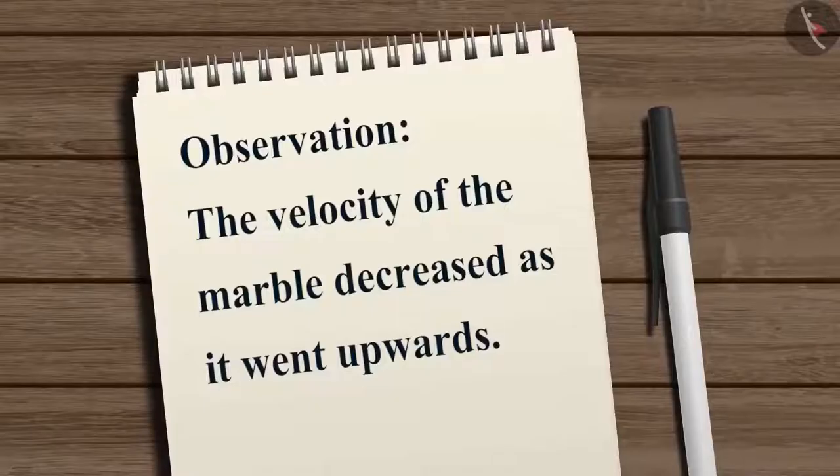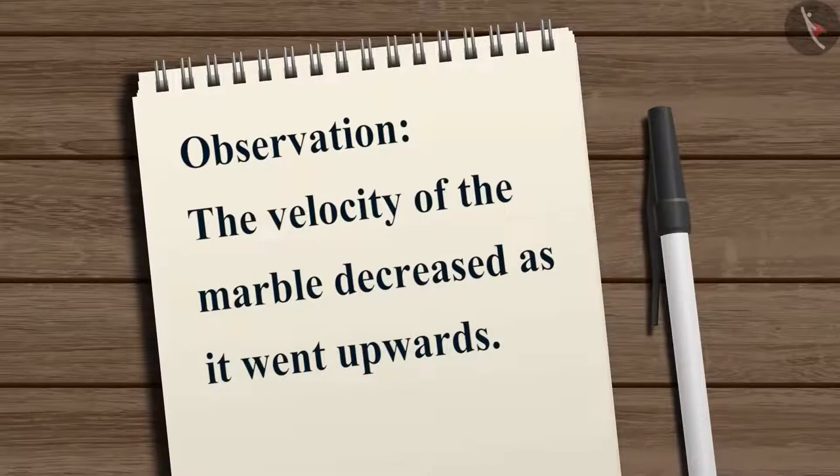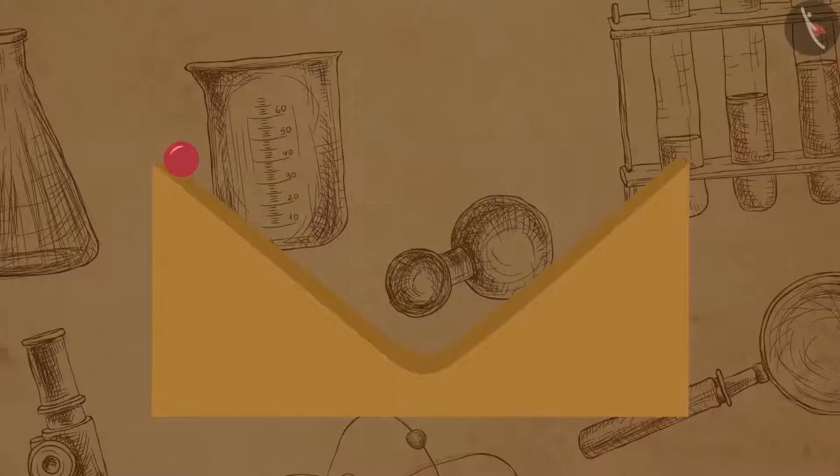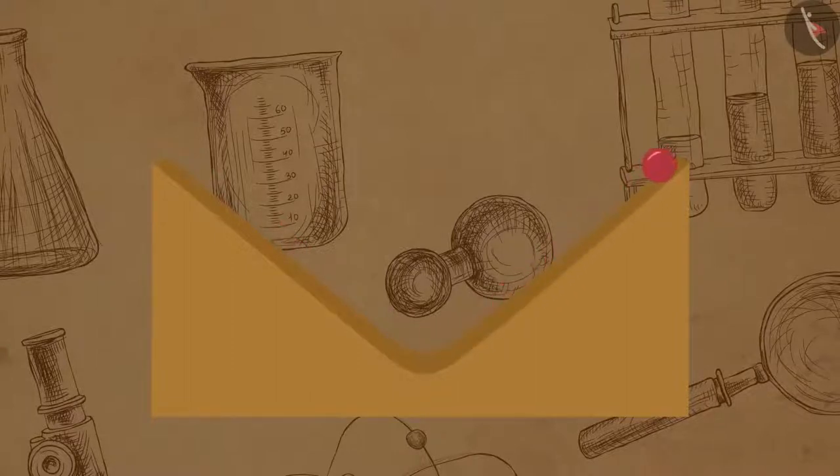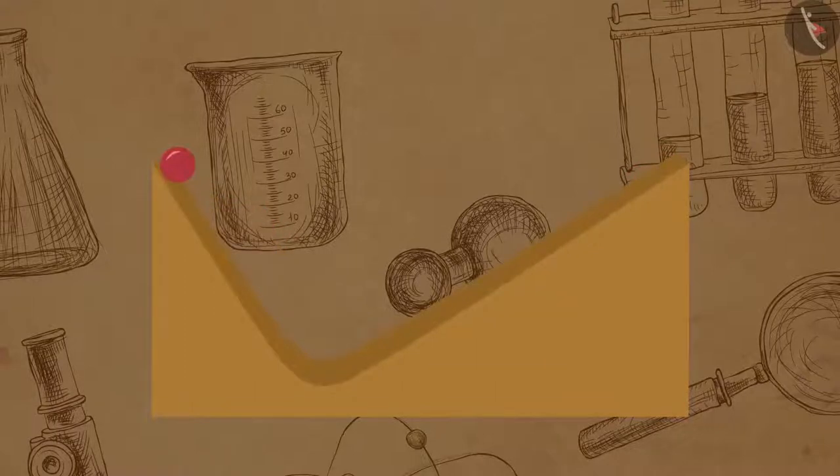This time he observed that the velocity of the marble decreased as it went upwards. Galileo further argued that if two inclined planes of opposite slopes were kept beside each other, then a marble released from the top of the slope will roll down only to climb up to the same height of the opposite slope. If the angle of inclination of the right plane was decreased, then the marble will go a bit further to reach the same height from which it was released.